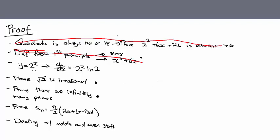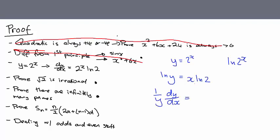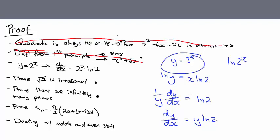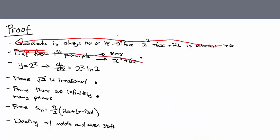Here's a nice proof: prove that y equals 2 to the x differentiates to 2 to the x times ln 2. First, take the log of both sides: ln y equals x ln 2. Differentiate each side: 1/y times dy/dx equals ln 2. Multiply both sides by y: dy/dx equals y ln 2. Since y is 2 to the x in the first place, dy/dx equals 2 to the x times ln 2. You can replace the 2 with any other base number.